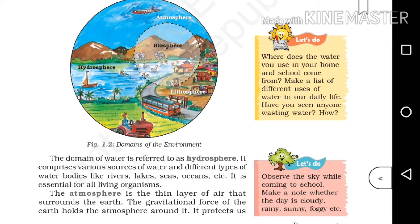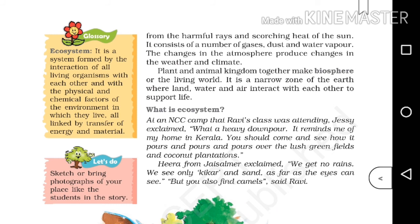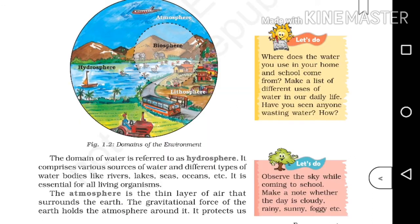For the question 'what is atmosphere,' there are four points. First: atmosphere is the thin layer of air that surrounds the earth. Second: the gravitational force holds the atmosphere around the earth. Third: the atmosphere protects the earth from harmful rays and heat. Fourth: it consists of a number of gases, dust, and water vapor. In figure 1.2, you can see the atmosphere at the topmost portion.